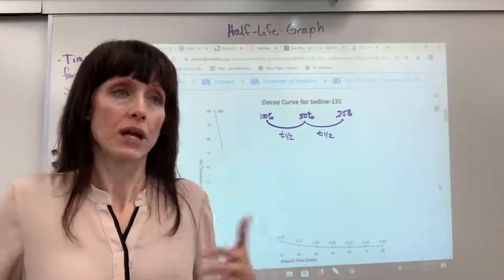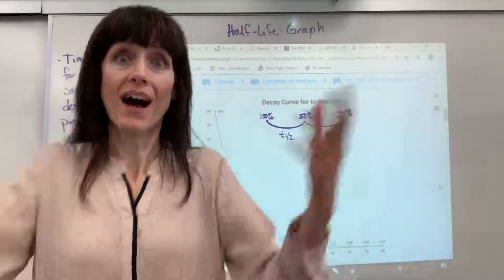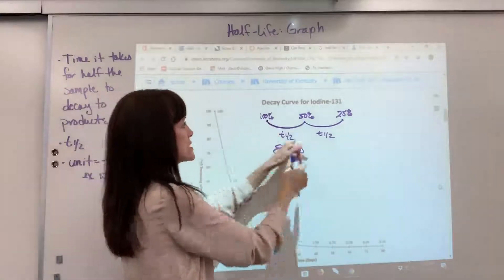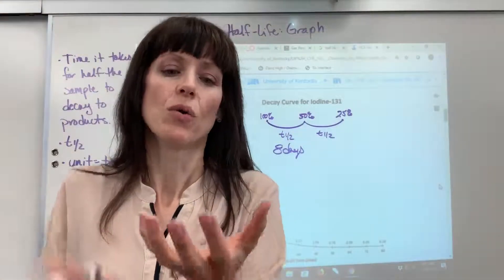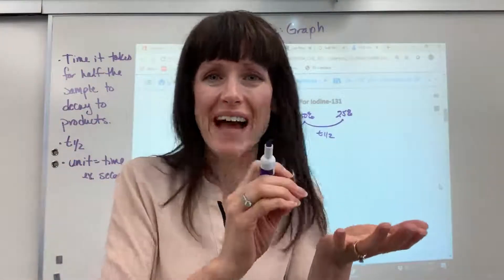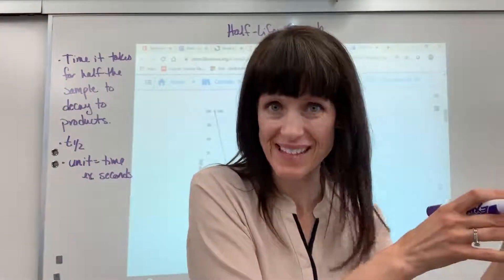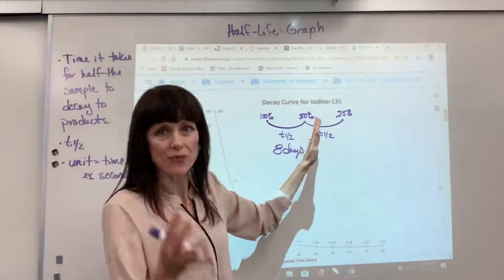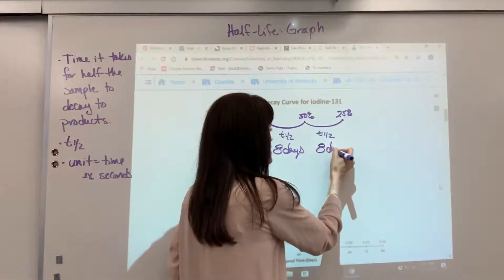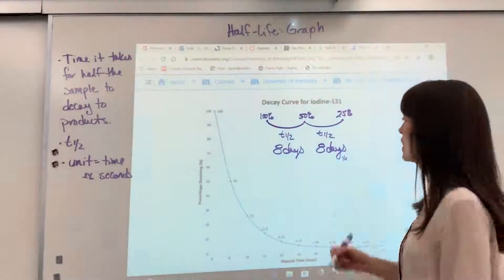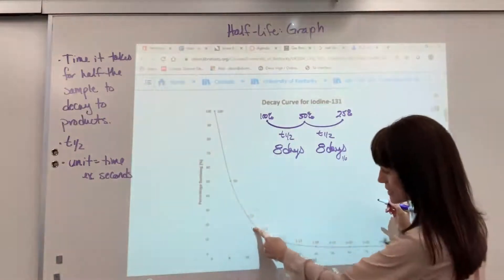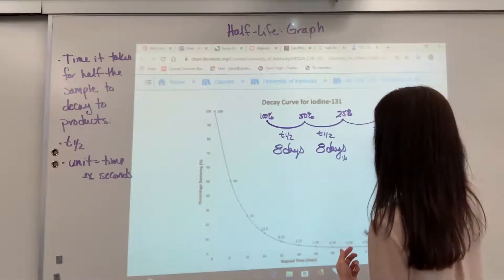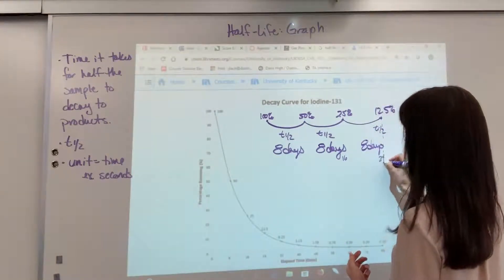Be careful here — a common student mistake: half of 100 is 50, but the next step is NOT half of 100 again. It's half of what's remaining. So it takes eight days to go from 100% to 50%. Now you have 50% of the iodine left, and that's going to take another eight days for half of that to be consumed. At day 16 you're at 25%, and another eight days brings you to 12.5% at day 24.